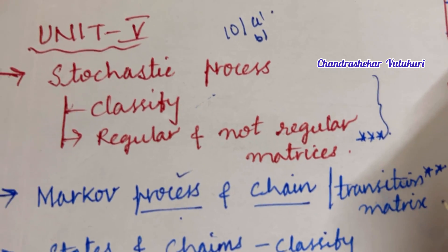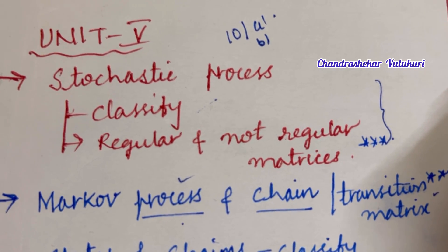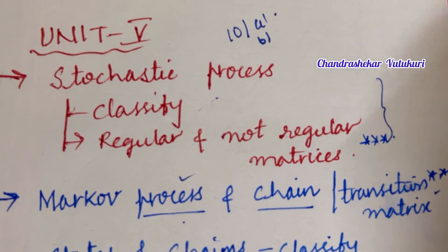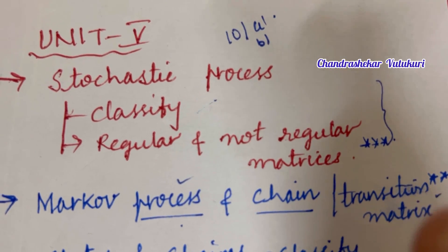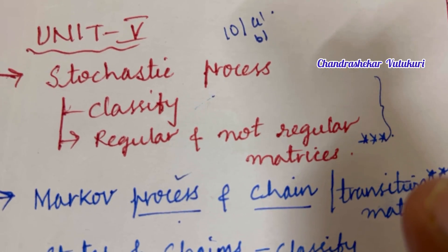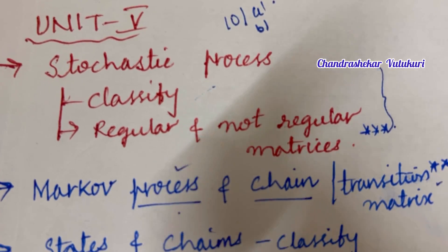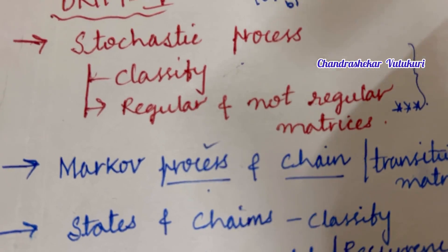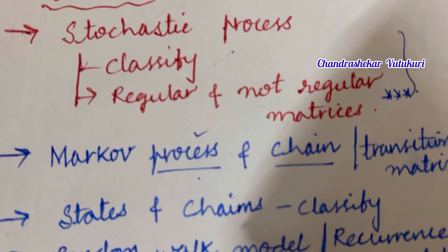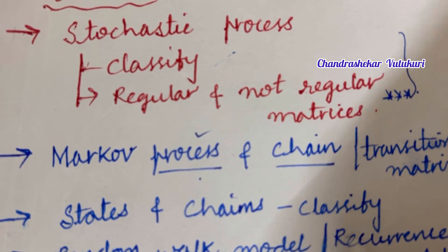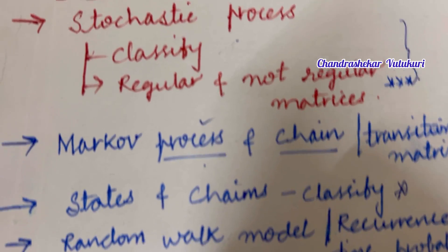The transition matrix is also said to be the topmost question. As you are going to get two short questions and two long questions, you are supposed to work out even the short questions from these concepts. States and chains — classify them — may be the short questions this time.